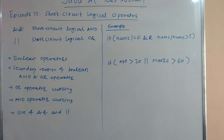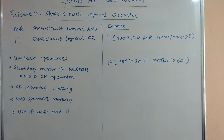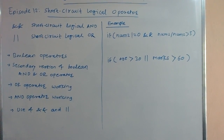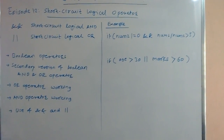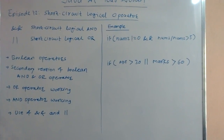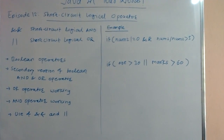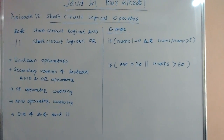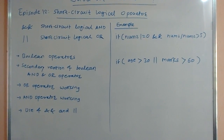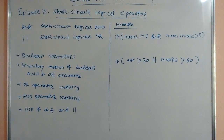Instead of the logical AND and OR operators, if we use short-circuit logical AND and short-circuit logical OR, it is very beneficial for us. For example, check the example on the right side of the whiteboard. The first example is: if number two is not equal to zero, then short-circuit logical AND, if number one divided by number two is greater than five.